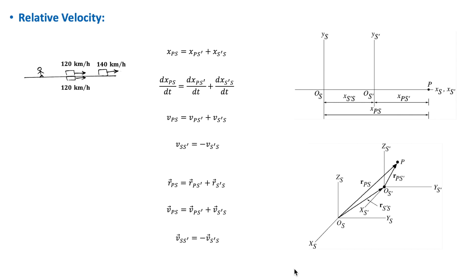To understand this, consider a particle P moving in one dimension in the positive x direction, and suppose that two observers want to describe its motion. Observer S is stationary relative to the ground, and observer S' is moving in the positive x direction with a constant velocity relative to the ground. The position of particle P relative to S equals the position of P relative to S' plus the distance between S and S'.